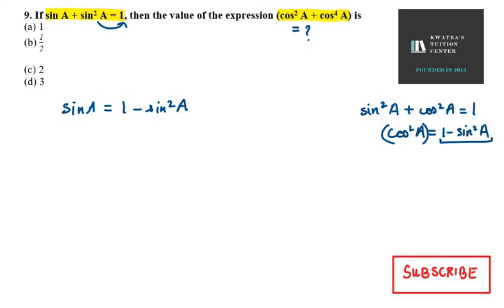We know we have an identity that is sin square A plus cos square A equals 1. Now, here cos square A will be 1 minus sin square A. How can we write cos square A?